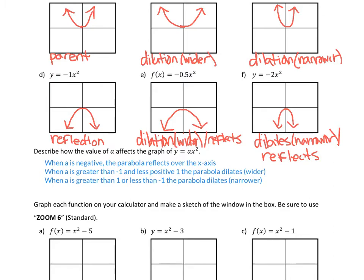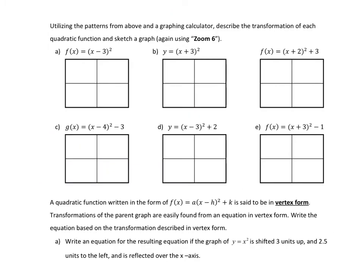Go ahead and do the next section and see what happens to your parabola when you add or subtract numbers. Utilizing the patterns from above and a graphing calculator, describe the transformation of each quadratic function and sketch a graph, again using zoom 6. So now we have a composition of functions or a composition of transformations happening here. It can move left, right, up, down. It could dilate. It could reflect. Anything can happen. So I'm just going to pick a couple here and see what happens.